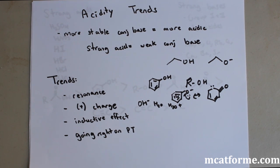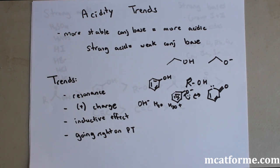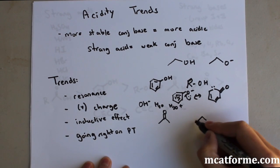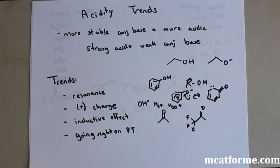The inductive effect: if you have a very electronegative atom near the particular hydrogen whose acidity you're measuring, or in the molecule overall, having more electronegative atoms around it is going to increase the acidity. For example, halogens are fairly electronegative, and putting a bunch of fluorines on a molecule is going to increase its acidity significantly, as you can see comparing these two molecules.